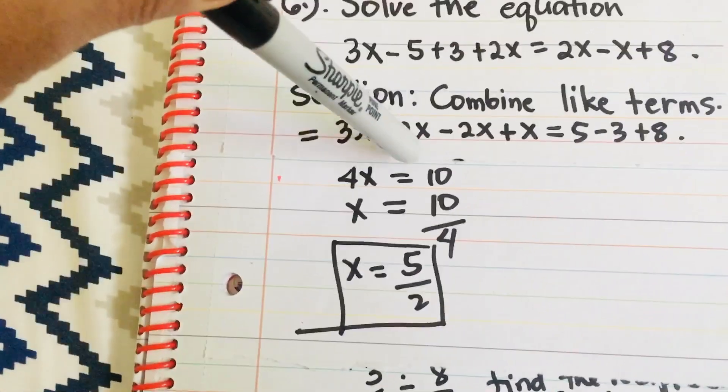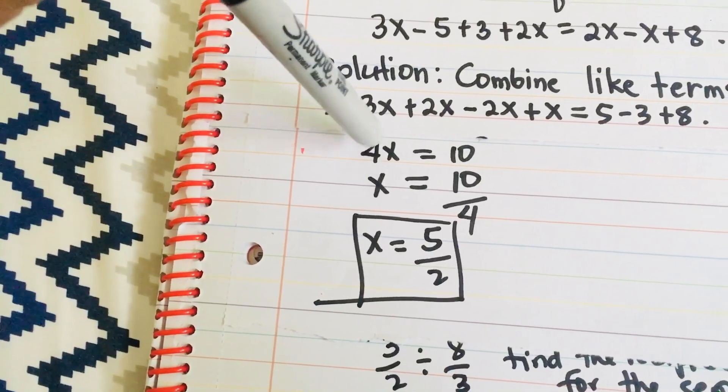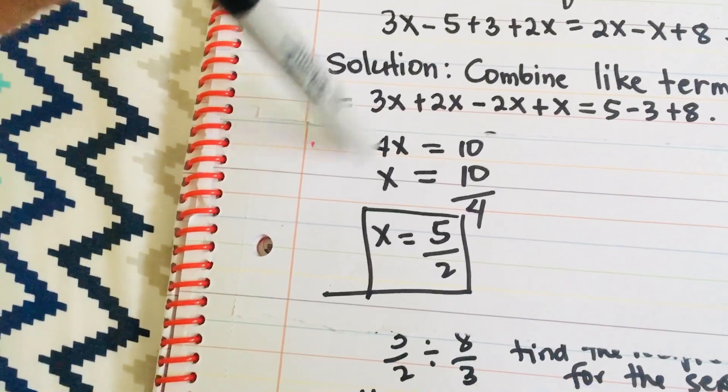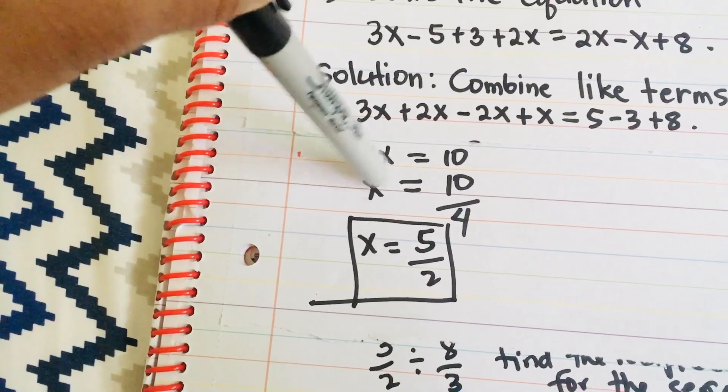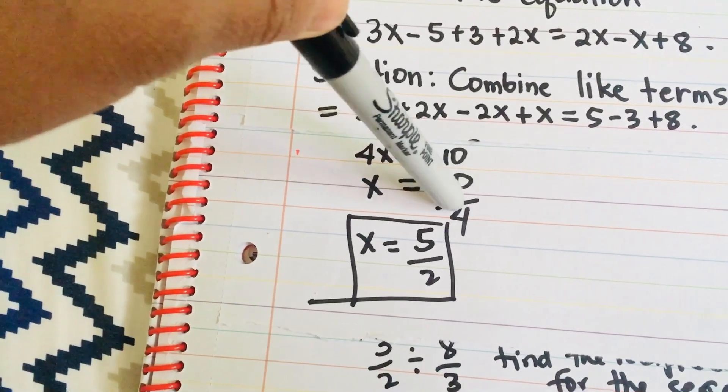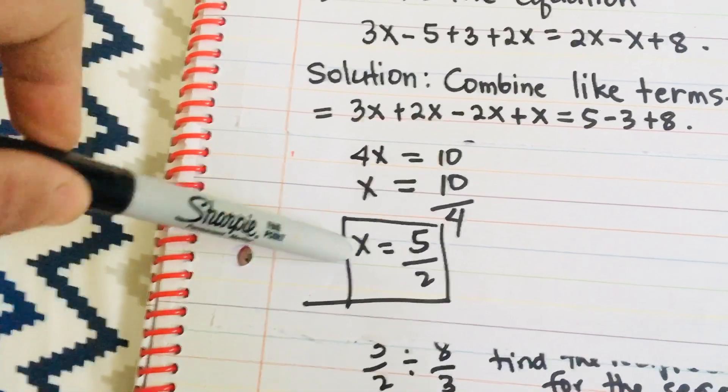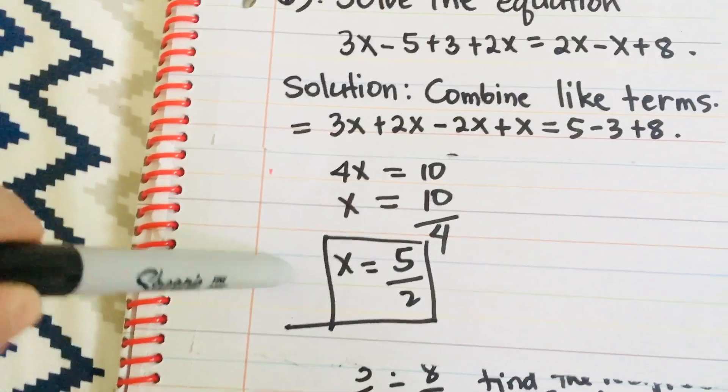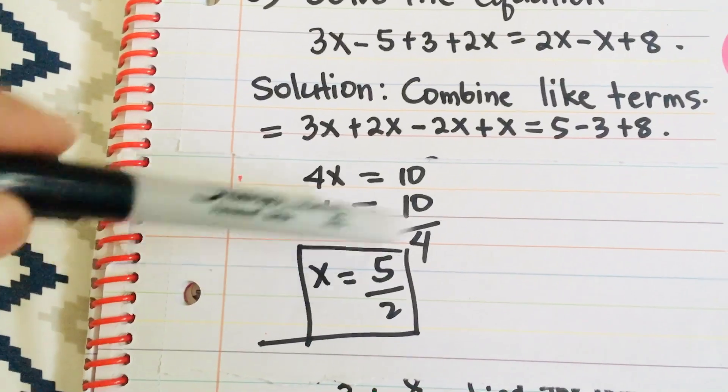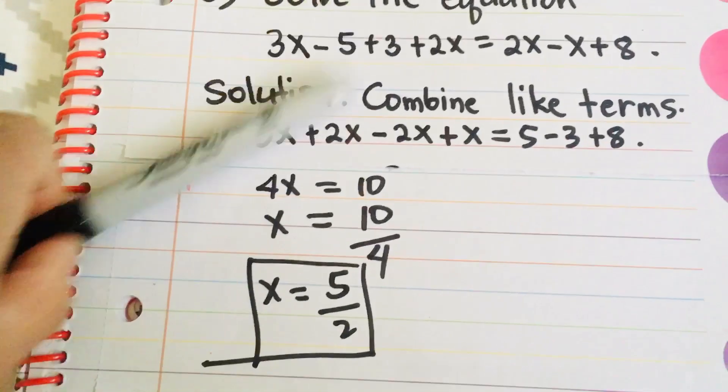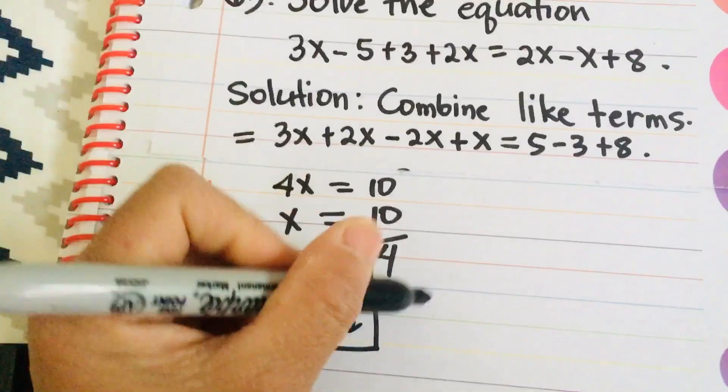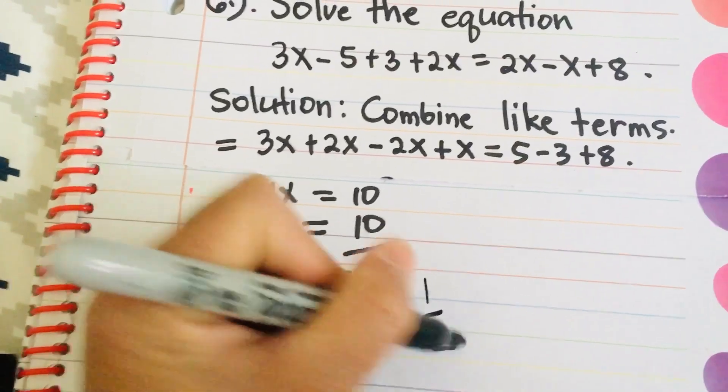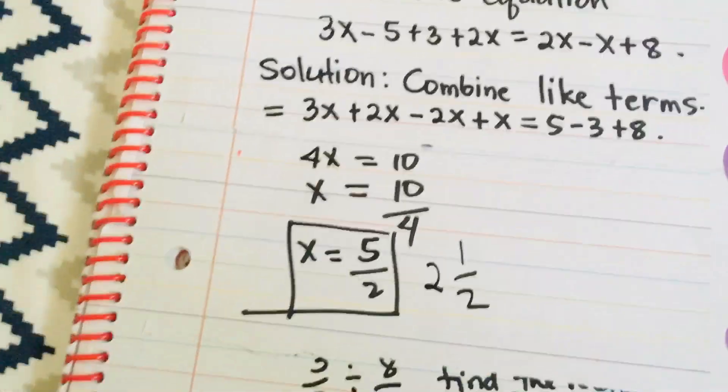So, we collect like terms. It was 4x equals 10. And then, you have to divide both sides by 4 to eliminate this on this side. So, x equals 10 over 4. Or, you always have to reduce the answer into lowest term, which is x equals 5 halves. Or if there is an option that says 2 and 1 half, that's correct too, because 5 halves is equal to 2 and 1 half.